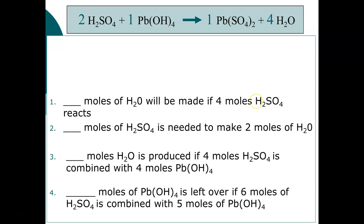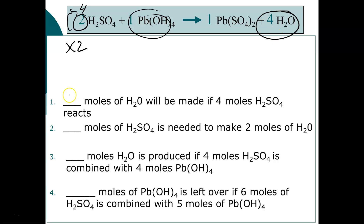For the first one: how many moles of H₂ will be made if four moles of H₂SO₄ react? I need two moles of H₂SO₄ in this recipe, but instead I have four moles — so I'm doubling my recipe. Assuming I have excess lead hydroxide, if I'm doubling my reactant H₂SO₄, I would double my product. Double that and I get eight. Four times two is eight.